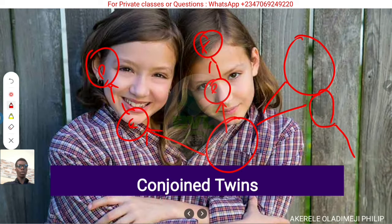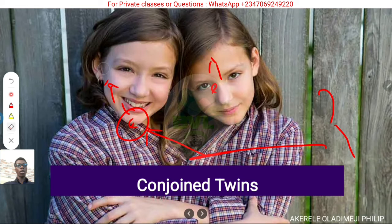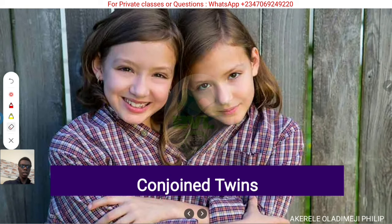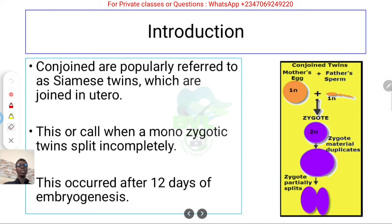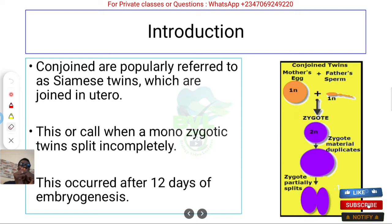Now, having established that, what brings us to conjoined twins? The two girls shown are wearing one shirt — that's because they are actually joined together. Conjoined twins are popularly referred to as Siamese twins, and they are joined in utero. It's not that they were separated and then rejoined; rather, when they were splitting, they didn't split completely.